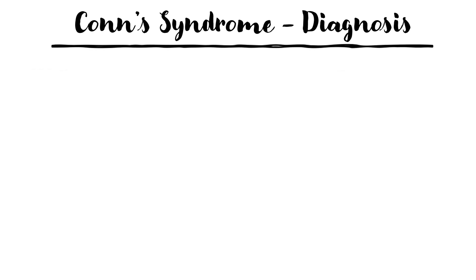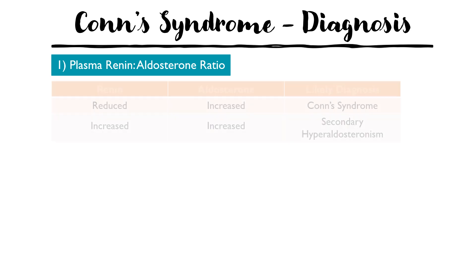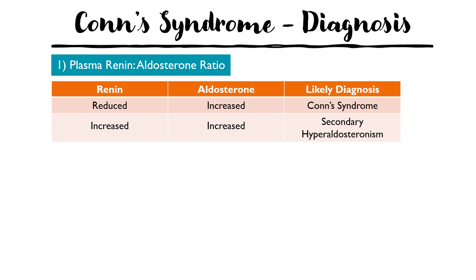For diagnosis of Conn's syndrome, the mainstay is measuring the plasma renin to plasma aldosterone ratio. If renin is reduced but aldosterone is increased, this indicates a problem directly with the adrenal glands — most likely primary Conn's syndrome. If both renin and aldosterone are increased, this suggests a problem further up the RAS system, i.e. secondary hyperaldosteronism, with causes such as heart failure or renal artery stenosis.